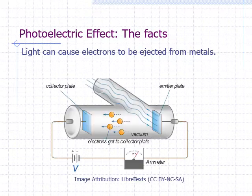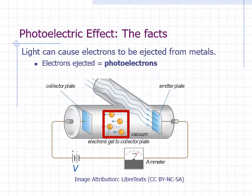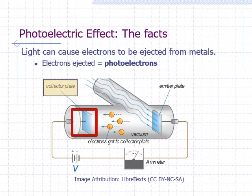Photoelectric effect refers to the ejection of electrons from a metal surface when we shine light on it. Illustrated here is an apparatus used to study the photoelectric effect. Two metal plates are placed inside a vacuum tube. One metal is subjected to light and is called the emitter plate. The electrons that are ejected are called photoelectrons. The photoelectrons travel from the emitter plate to the other metal plate, which is called the collector plate.